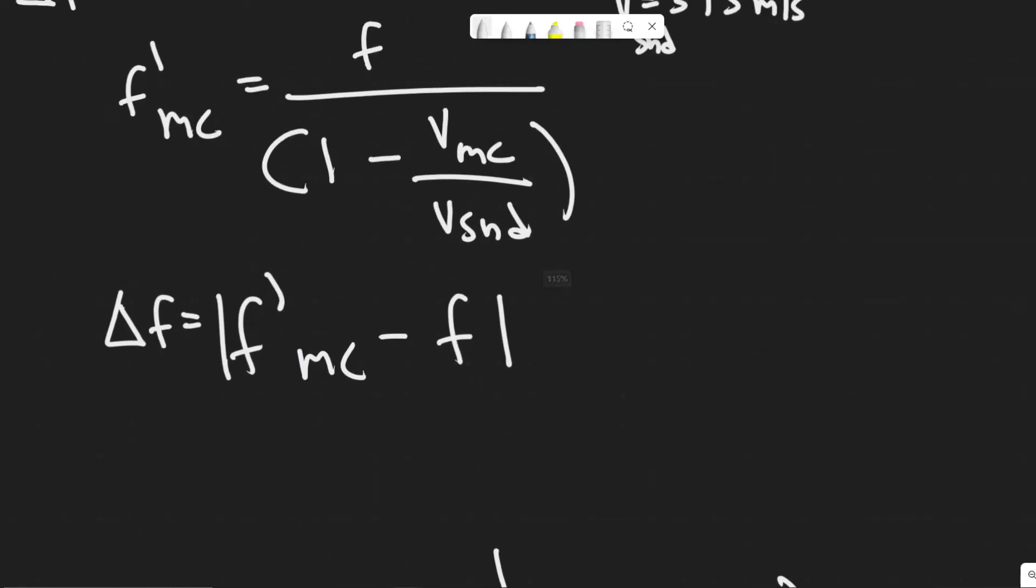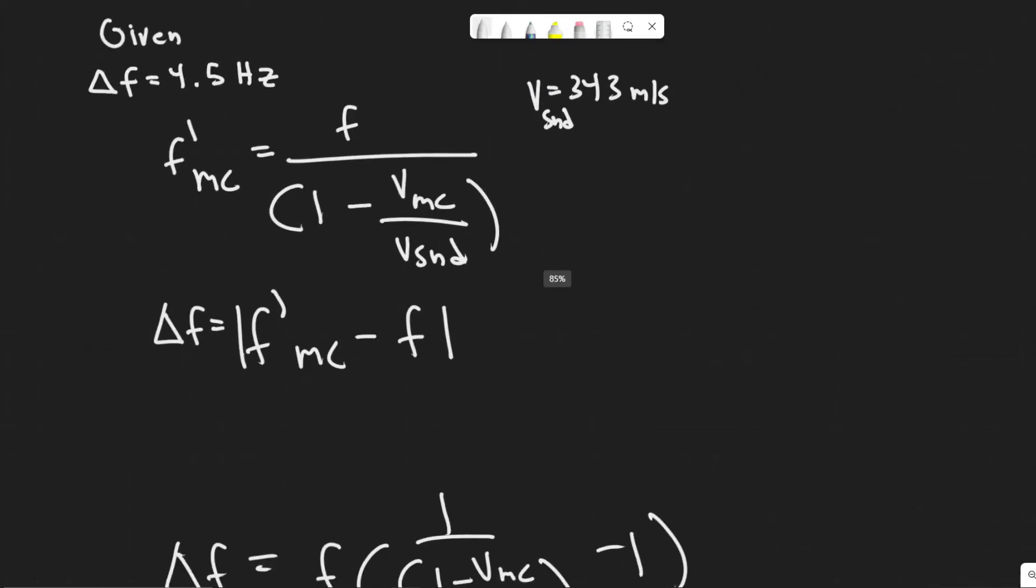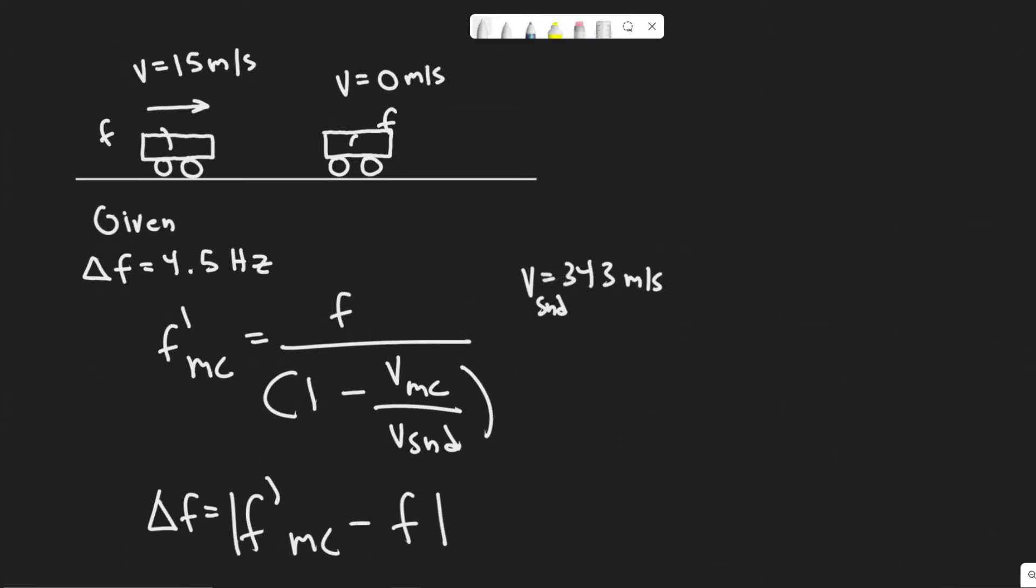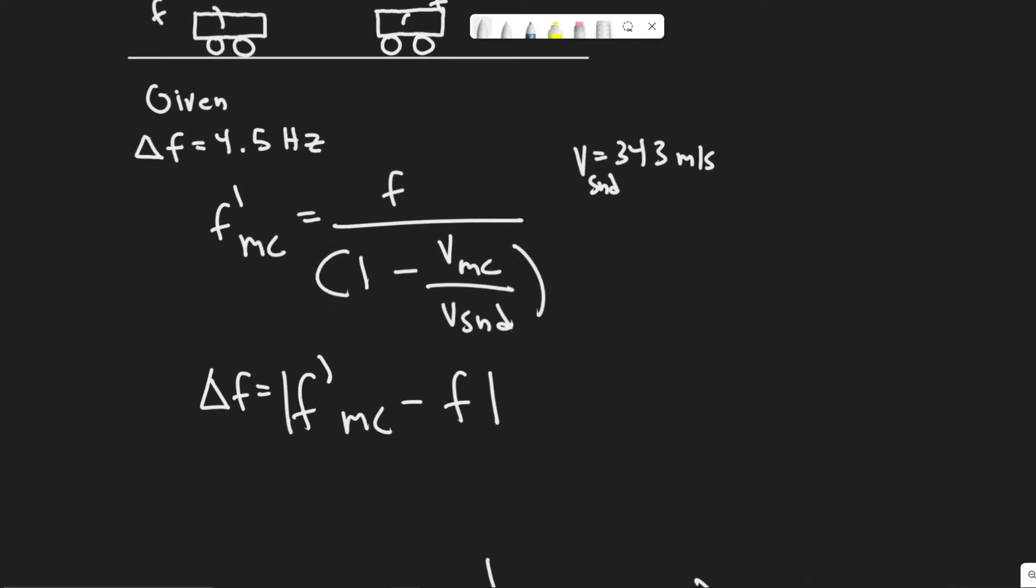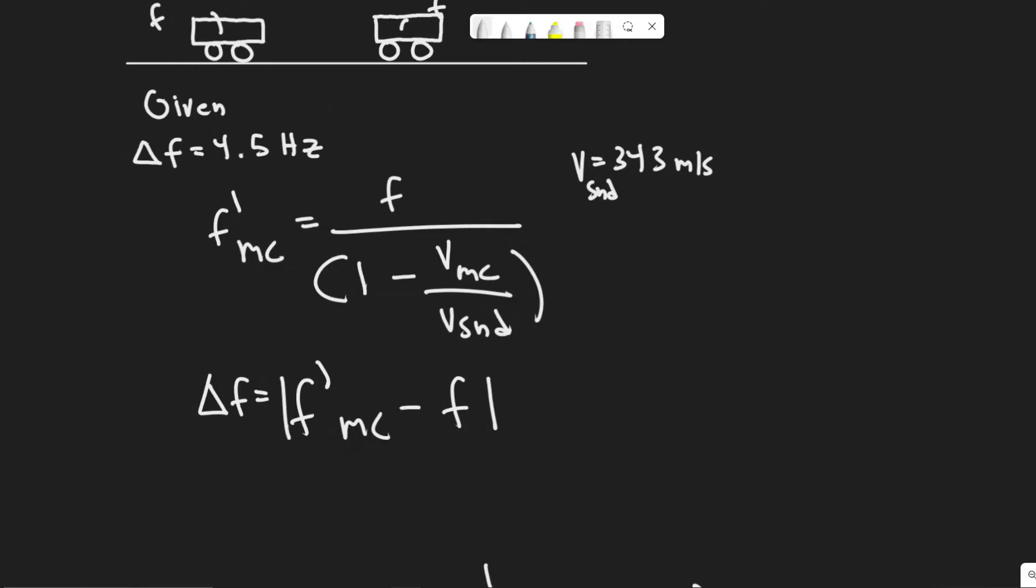The reason is F prime, what it's going to interpret is greater since it's moving towards it, which is why this right here is a negative sign, making this whole value greater. Because if you do one minus a value, it's going to be less than one, which decreases the denominator, making F prime MC greater. So this value is going to be positive, but it's actually the absolute value when you solve it.